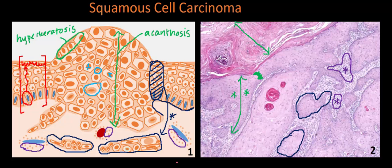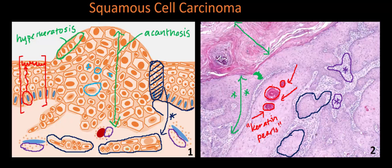Something prominent in the image but not discussed in the cartoon are the hypereosinophilic clumps in the center. Eosin is an acidic red dye that stains basic structures such as proteins, and keratin is a protein. These bright red hypereosinophilic clumps are essentially keratin being produced by atypical keratinocytes in the SCC. Histologically, they are referred to as keratin pearls, and they are a useful diagnostic marker when diagnosing squamous cell carcinoma.